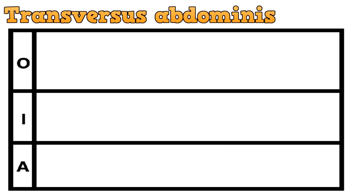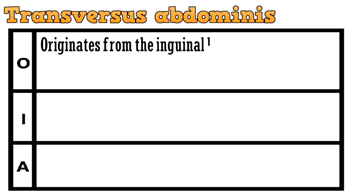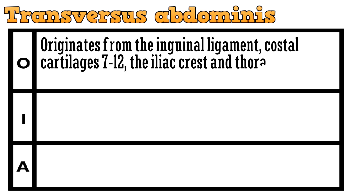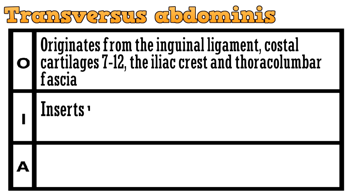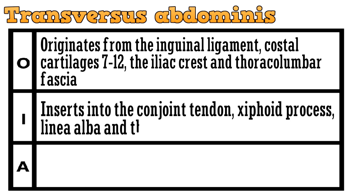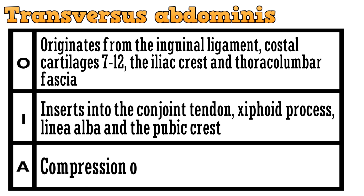Our next muscle is the transversus abdominis. This muscle originates from the inguinal ligament, costal cartilages 7 to 12, the iliac crest, and the thoracolumbar fascia. It gets inserted into the conjoined tendon, xiphoid process, linea alba, and the pubic crest.